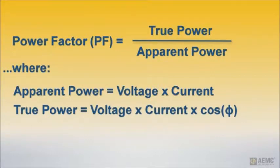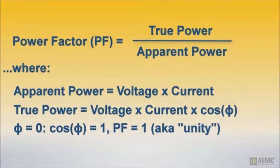When phase shift is zero, its cosine is 1, resulting in true power equaling apparent power. In this case, power factor is 1, the ideal value, also known as unity.